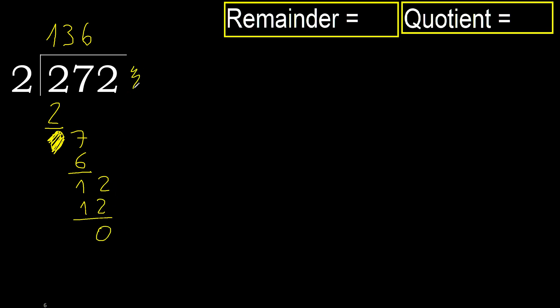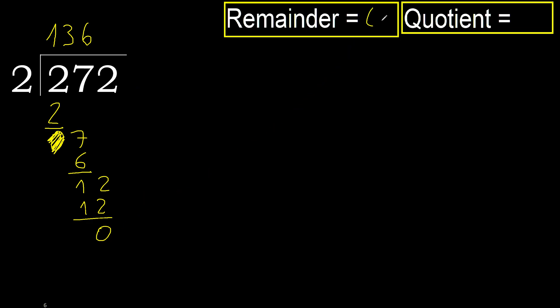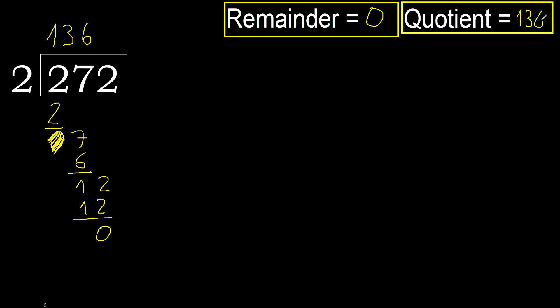That is not a number, therefore finish it. 272 divided by 2 is 136.